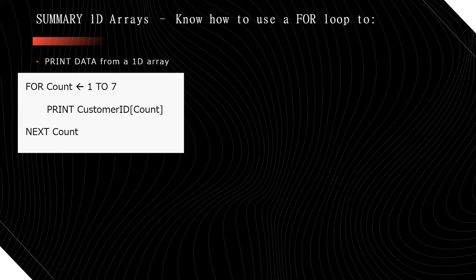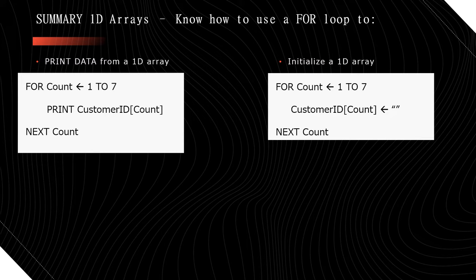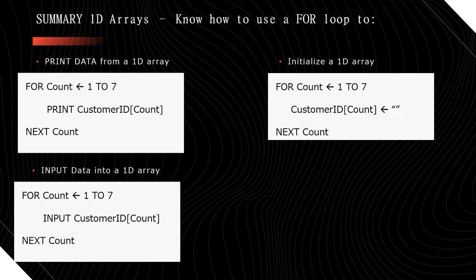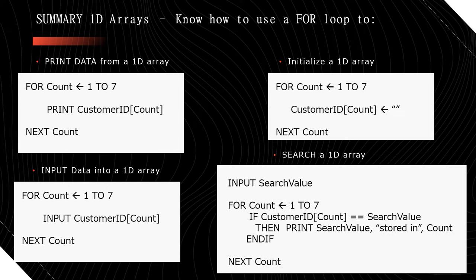To summarize four typical operations on 1D arrays: First, to print data, use a for loop to iterate and print each element. Second, to initialize, use a for loop assigning an empty string or 0 — an empty string is better if IDs can start with 000 since that can't be a number. Third, to input data, use a for loop with an input statement. Most importantly, never forget the square brackets when working with arrays. Fourth, for a linear search, input a search value, use a for loop, and inside use an if statement to check each element.